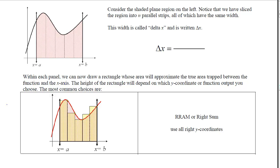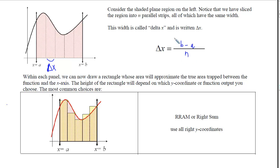To understand how RAM works, we consider a shaded plane region sliced into n parallel strips, all of the same width. We call this width delta x, using the Greek letter delta. To find delta x, we take the entire distance between the left and right edges, which is b minus a, and divide that distance into n pieces.